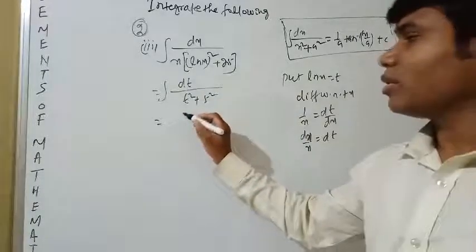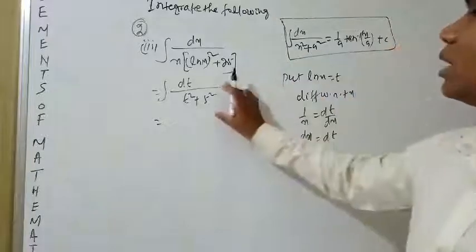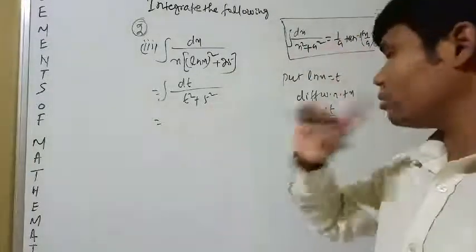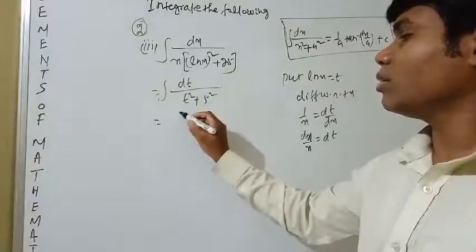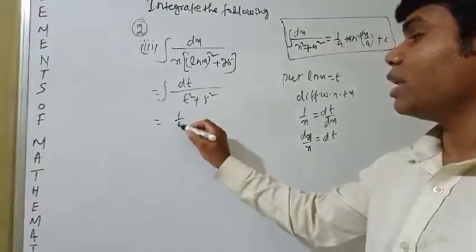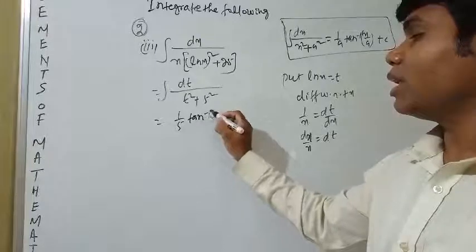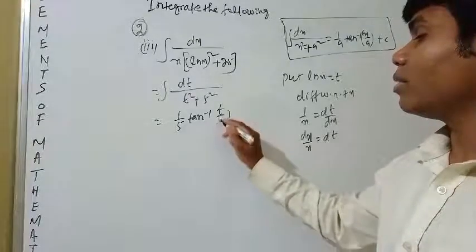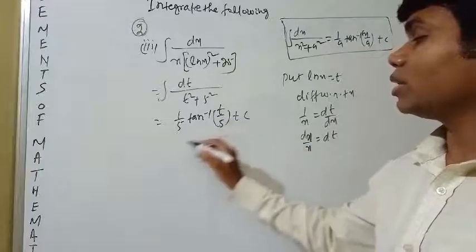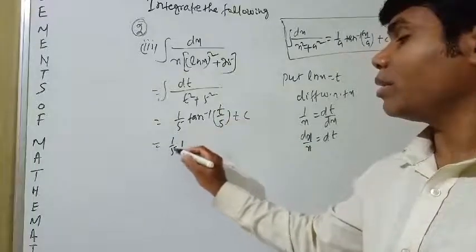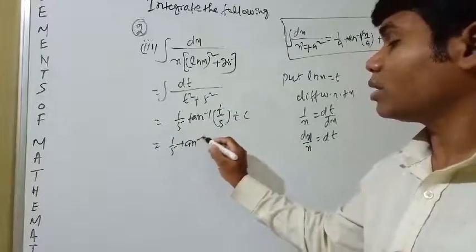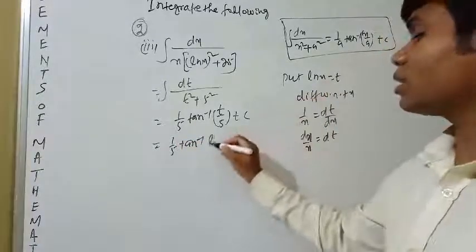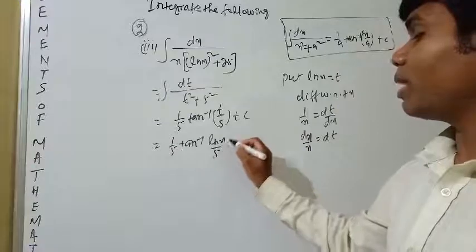Substituting dx/x = dt and ln x = t, the integral becomes ∫dt / (t² + 5²), which is in the standard form ∫dx / (x² + a²). So the result is (1/5) tan⁻¹(t/5) + c = (1/5) tan⁻¹(ln x / 5) + c.